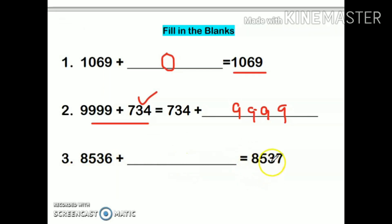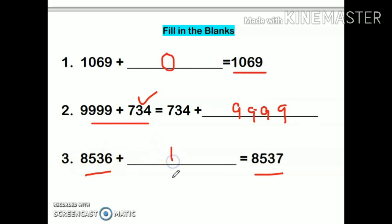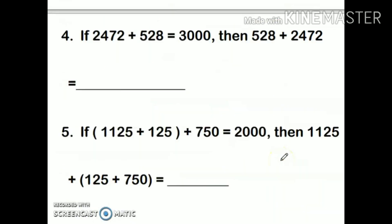Next: 8536 plus blank equals 8537. As you can notice, 8537 is the very next number — the successor of 8536 — so I will add 1, as we discussed earlier in the properties of addition: whenever we add one to any number, the answer is the successor of that number.